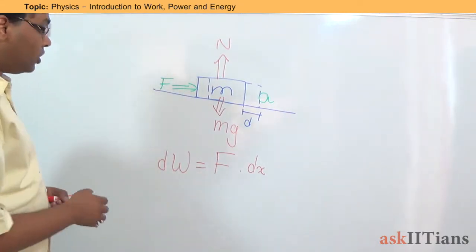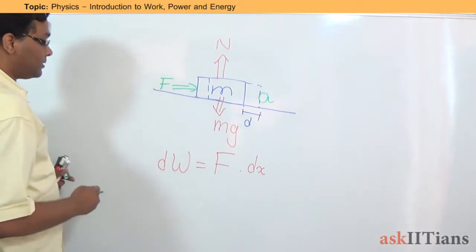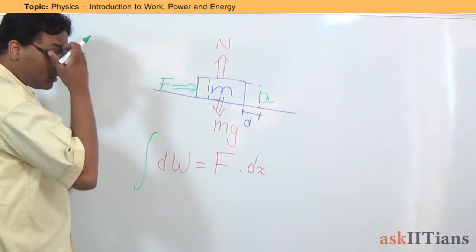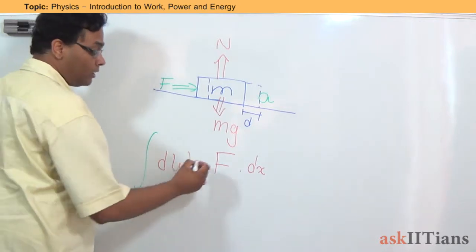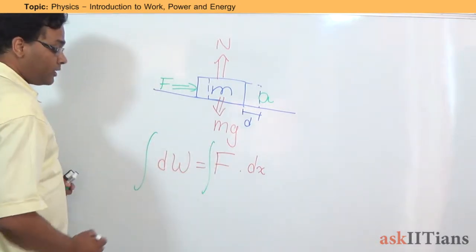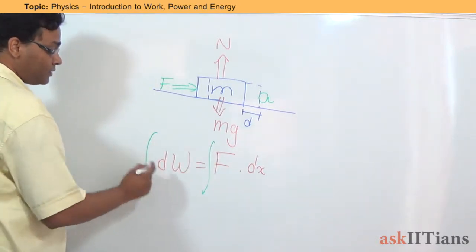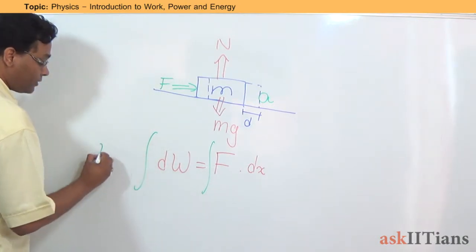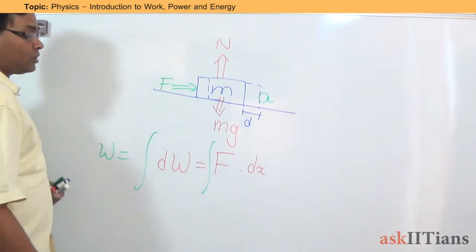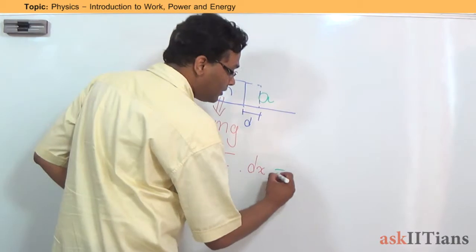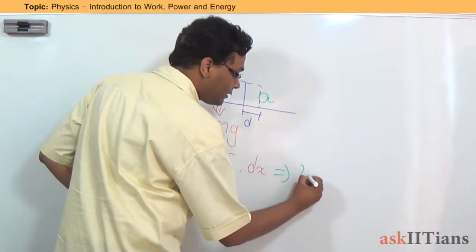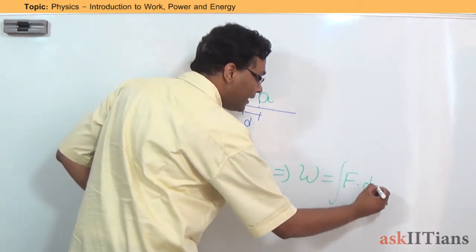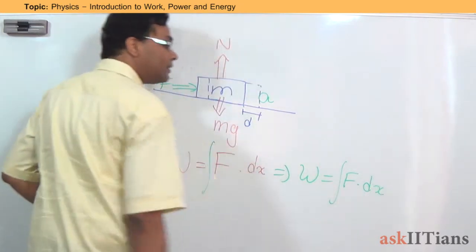When this is the thing that happens, if I want to find out the total work that is done, this integration will tell me that the total work done is equal to W. So in general, what I will get is W is equal to the integration of F dot Dx.